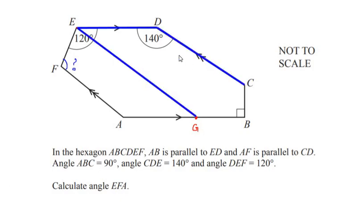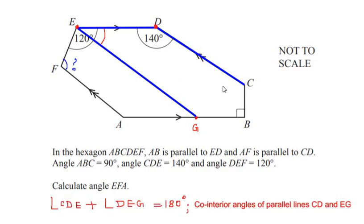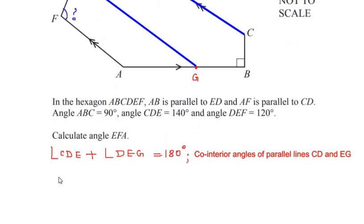Now after this construction, let us consider the pair of parallel lines CD and EG. For these two parallel lines, the line ED acts as a transversal which cuts the two lines at point E and at point D. Angle E and angle D act as co-interior angles of the given two parallel lines. So we can write: angle CDE plus angle DEG is equal to 180 degrees — that is the co-interior angles property of parallel lines CD and EG.